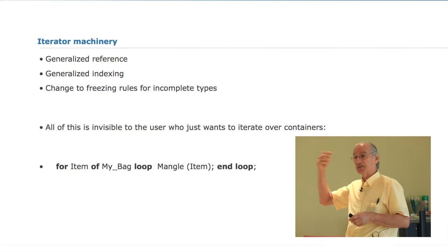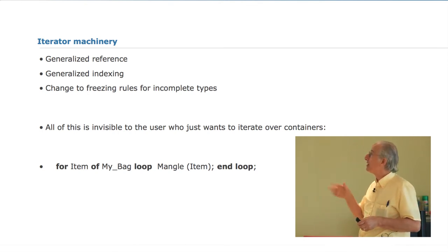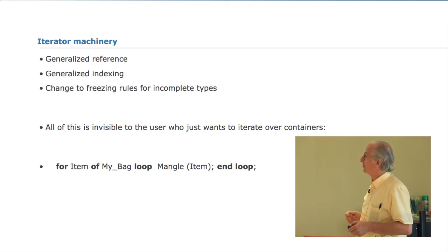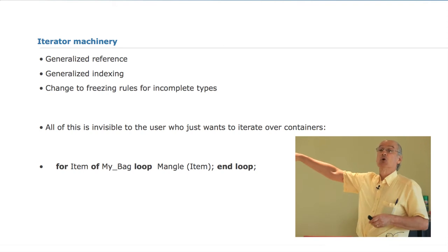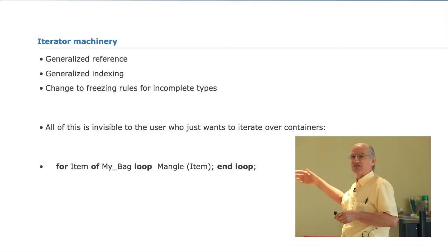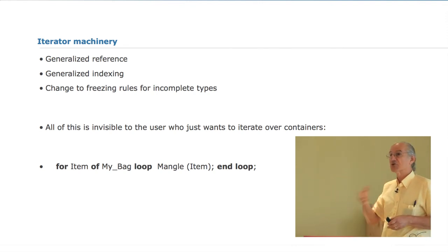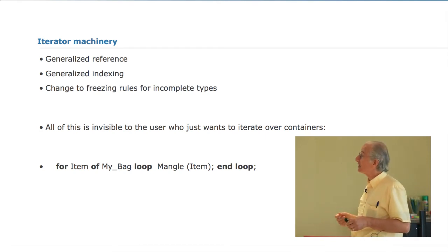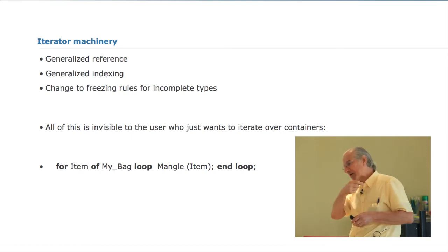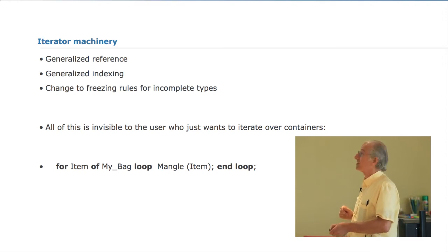The deconstruction involves: the introduction of a generalized reference, the introduction of a generalized indexing aspect, and some minor stuff involving incomplete types. The goal, among other things, is to allow you to say: do some operation to everything that's in this container, and use this syntax for all containers regardless of their internal structure. We might want to do this by speaking directly about the contents, without worrying about a pointer or index that denotes each one of them. Being able to write this is really the great advantage of this new machinery.